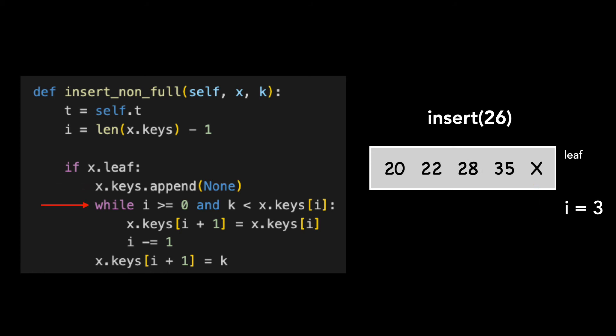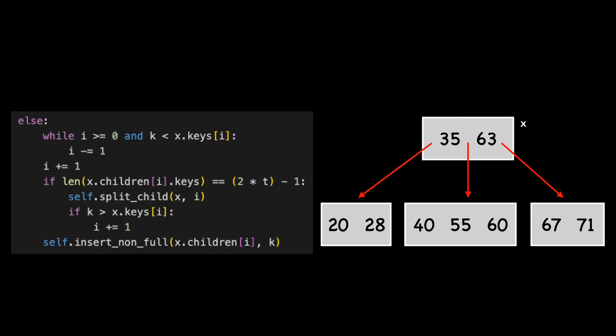We then iterate through the keys until we find the correct spot for 26. I'll let the visual play without voiceover. Let's take a look at the rest of the code, where the node is not a leaf.